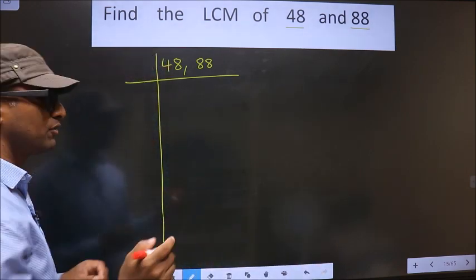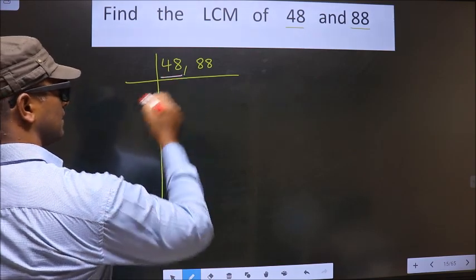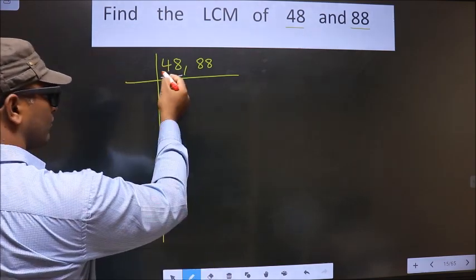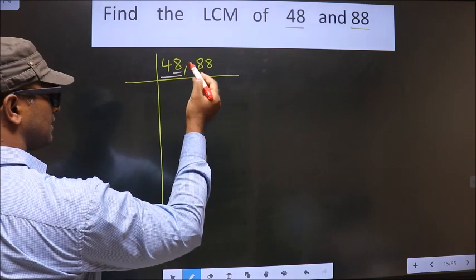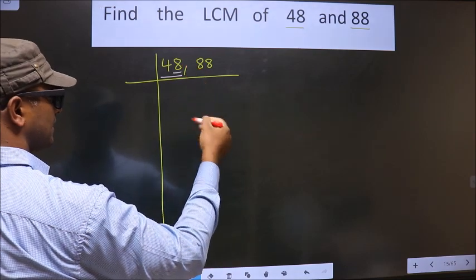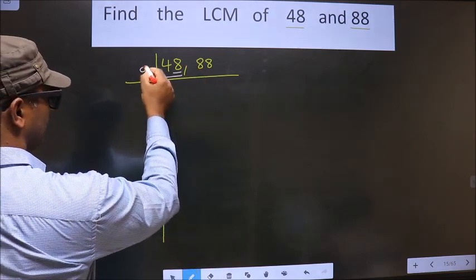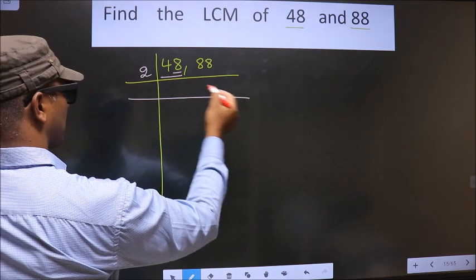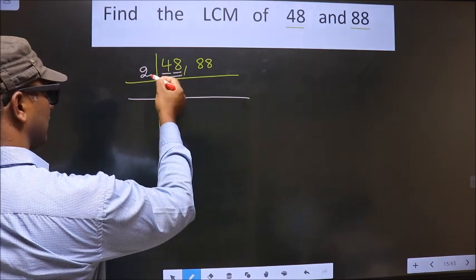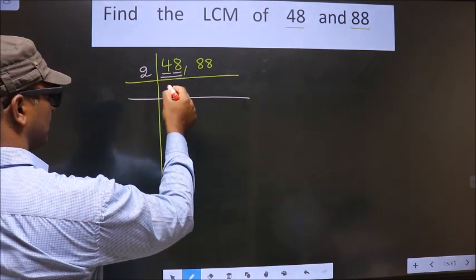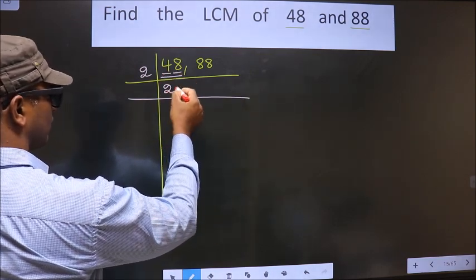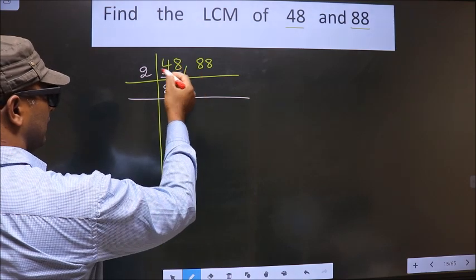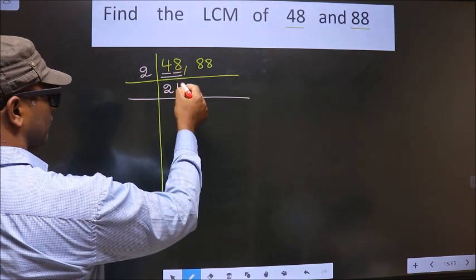Now, we focus on the first number, that is 48. For this number, the last digit is 8 which is even, so we take 2 here. The first number is 4 — we get 4 in the 2 table at 2×2=4. The next number is 8 — we get 8 in the 2 table at 2×4=8.